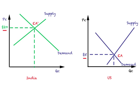Under autarky, clothing sells for $20 in India and $5 in the U.S. Suppose both countries decide to engage in free foreign trade. Indian consumers would like to purchase clothing from the U.S. at $5, or any price lower than the $20 they were paying. However, at $5 in the U.S., demand equals supply — there is nothing extra for the U.S. to sell to the Indian market.